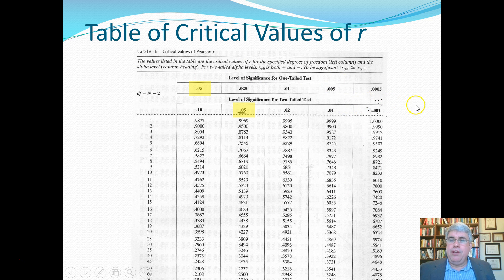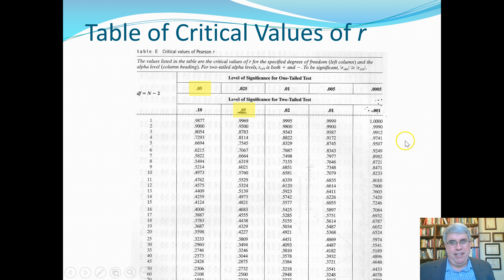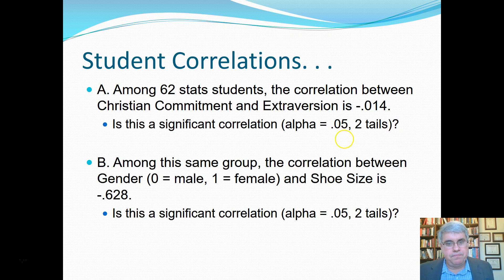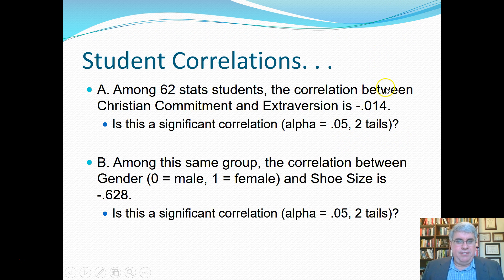That's how to use the table of critical values of R. You can Google 'table of critical values of R' and find it easily — even though I have the textbook on my desk, sometimes I do that because it's easier. Now let's see how we could use this with a couple of other examples — here are some more student correlations I've collected.